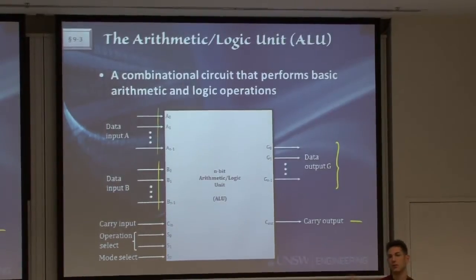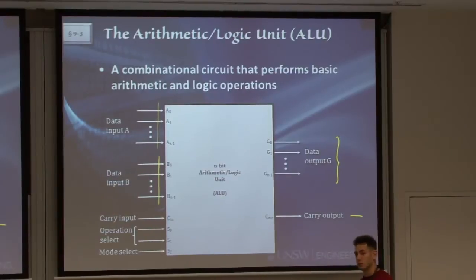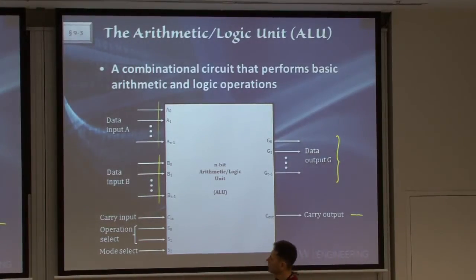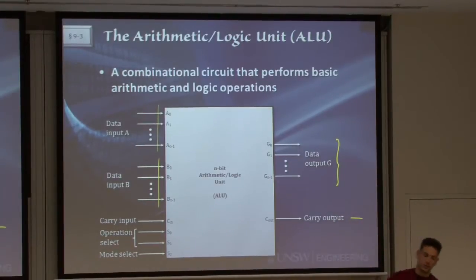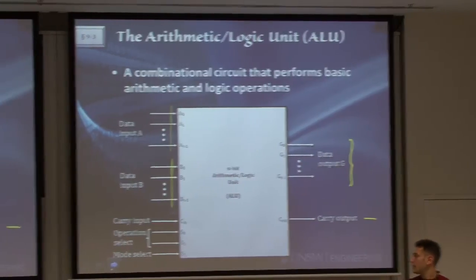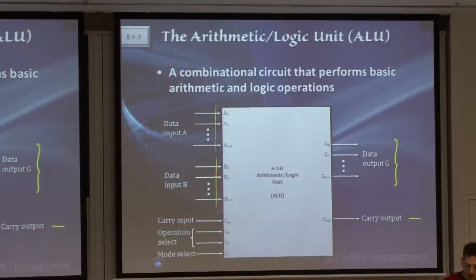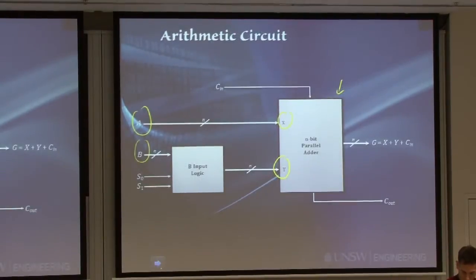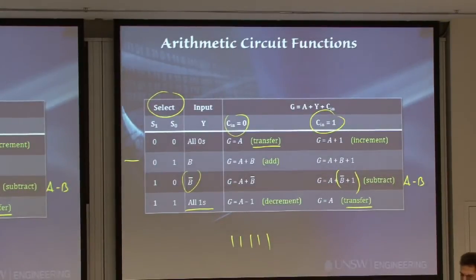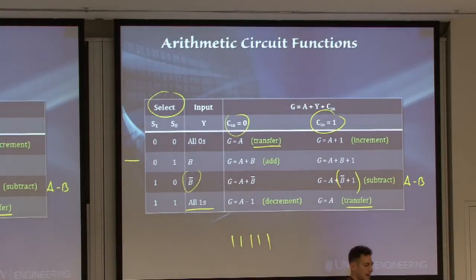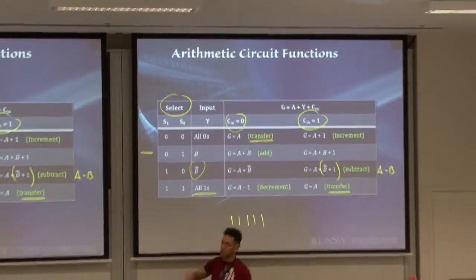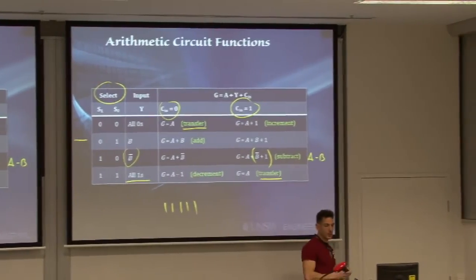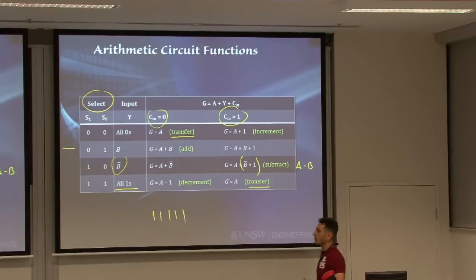The arithmetic logic unit takes two vectors, A and B, of some N bits depending on the size of your machine. It takes some control inputs S0, S1, and S2, and a carry-in from the outside, does whatever is required, and throws out the result plus some carry-out. There are eight different operations that can come from the arithmetic circuit, controlled by the two select signals S0 and S1, and by putting in the carry-in either 0 or 1 we essentially double the number of operations.